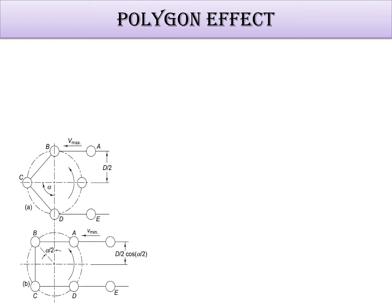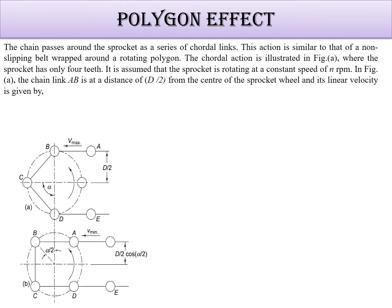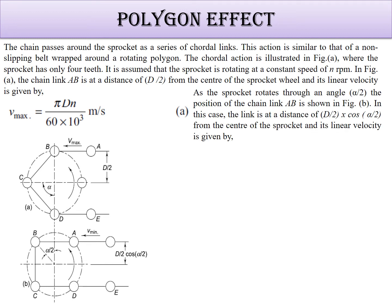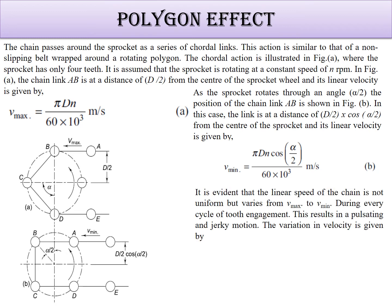At one position the velocity is minimum, and at another position the velocity is maximum. For N rpm, V_max equals pi*d*N / (60 × 10³) meters per second. At position b, the effective radius becomes d/2 × cos(alpha/2), so V_min equals pi*d*N*cos(alpha/2) / (60 × 10³) meters per second.